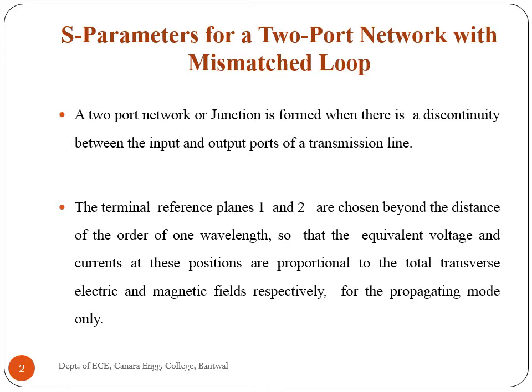S parameters for a two-port network with mismatched load: a two-port network or junction is formed when there is a discontinuity between the input and output ports of a transmission line. The terminal reference planes 1 and 2 are chosen beyond the distance of the order of one wavelength, so that the equivalent voltage and currents at these positions are proportional to the total transverse electric and magnetic fields respectively, for the propagating mode only. These circuits are analyzed using S-matrix formulation.